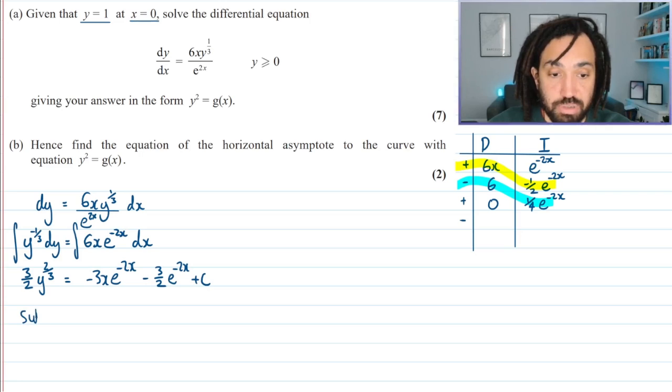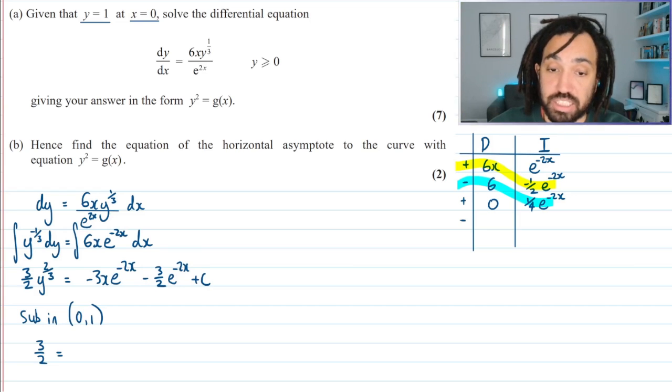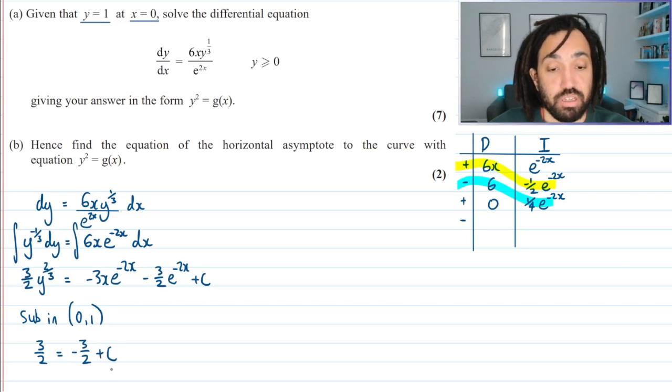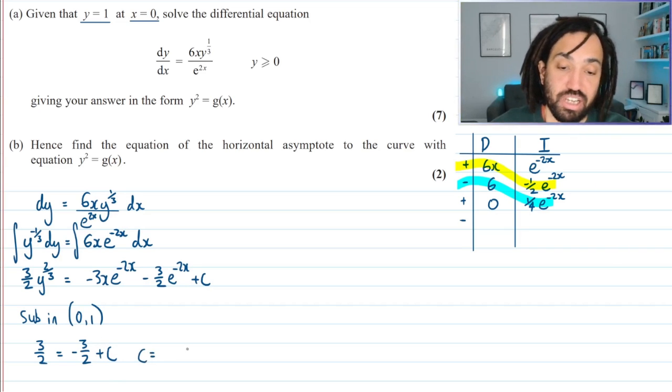So I sub in the point 0, 1, and that's going to give me, well, y to the power of 1 to the power of anything is 1, so 3 over 2 times 1 is just 3 over 2. x is 0, so this term here is going to go to 0. But careful, when x is 0, this term won't go to 0, because e to the 0 is 1, so times by minus 3 over 2 just gives you minus 3 over 2, plus c. So from here we can see that c is 3.